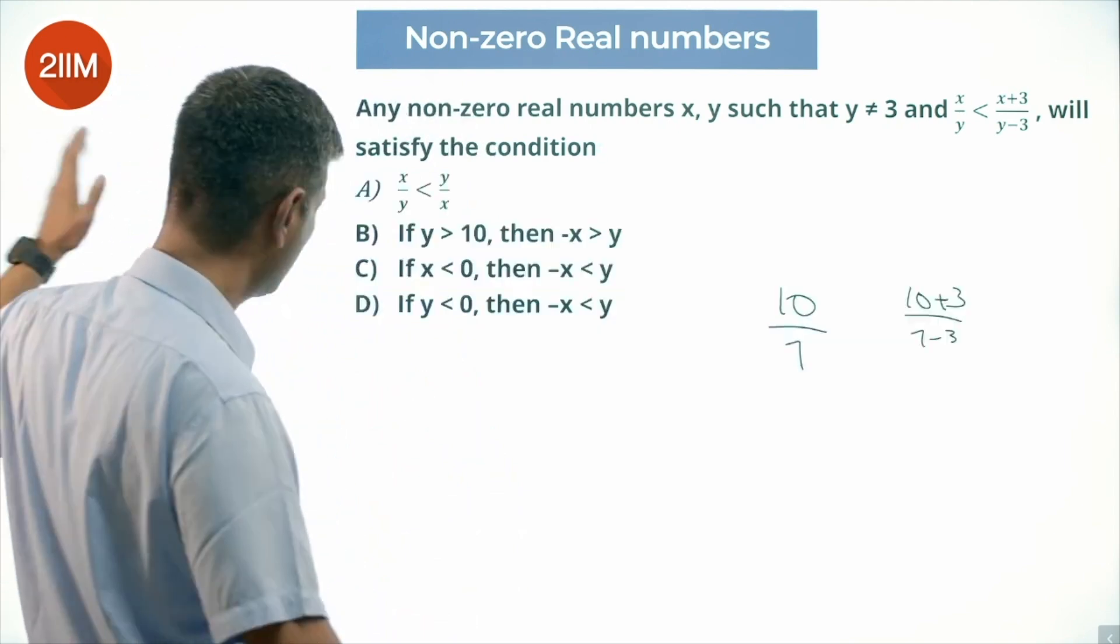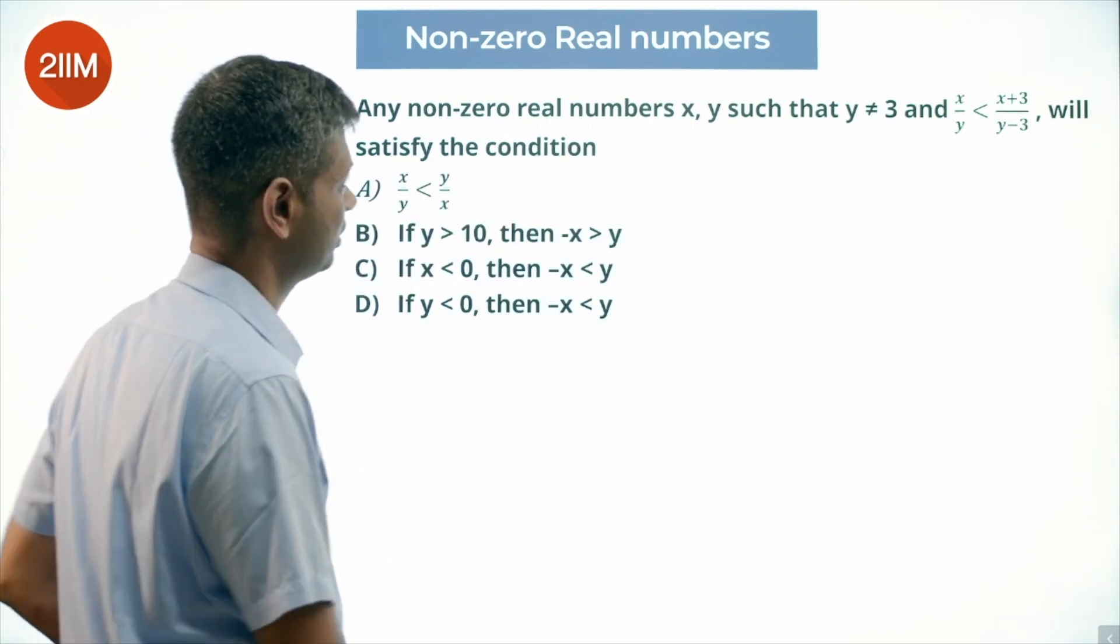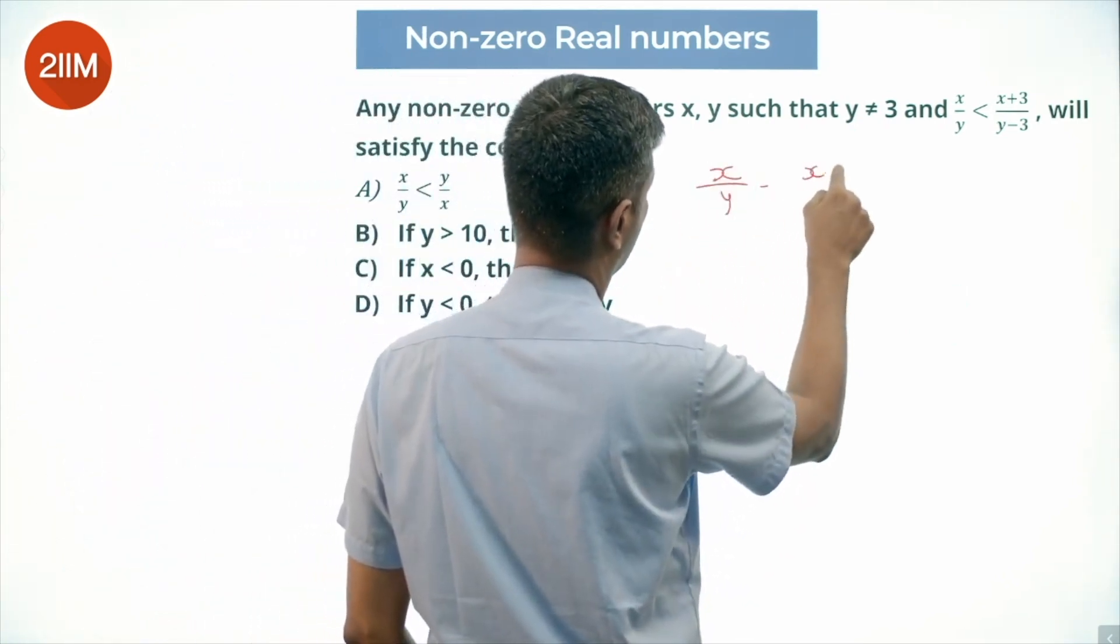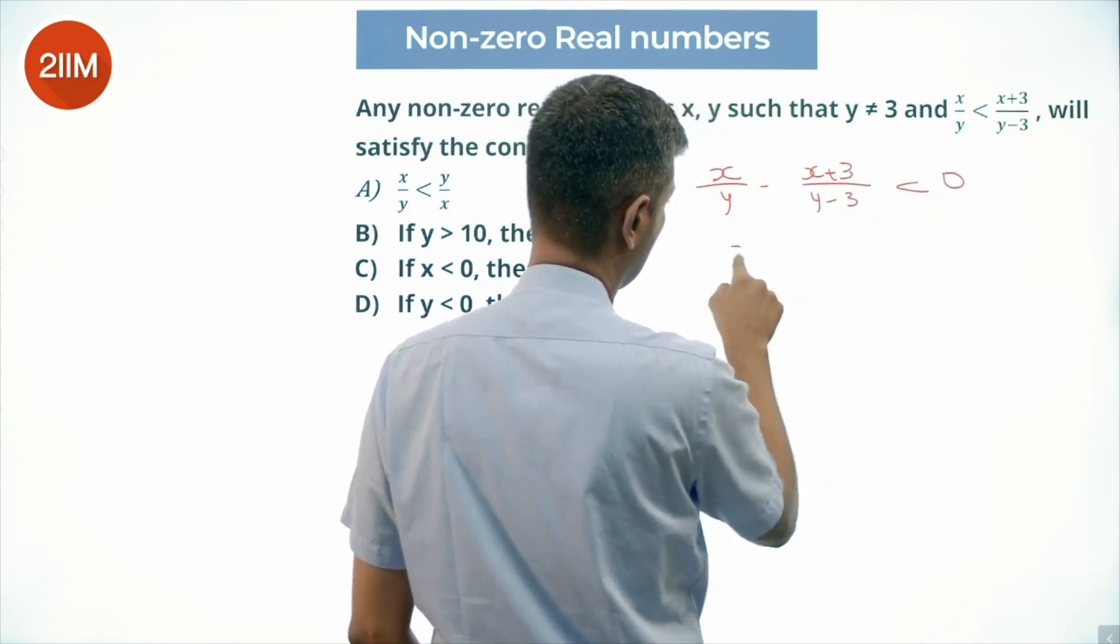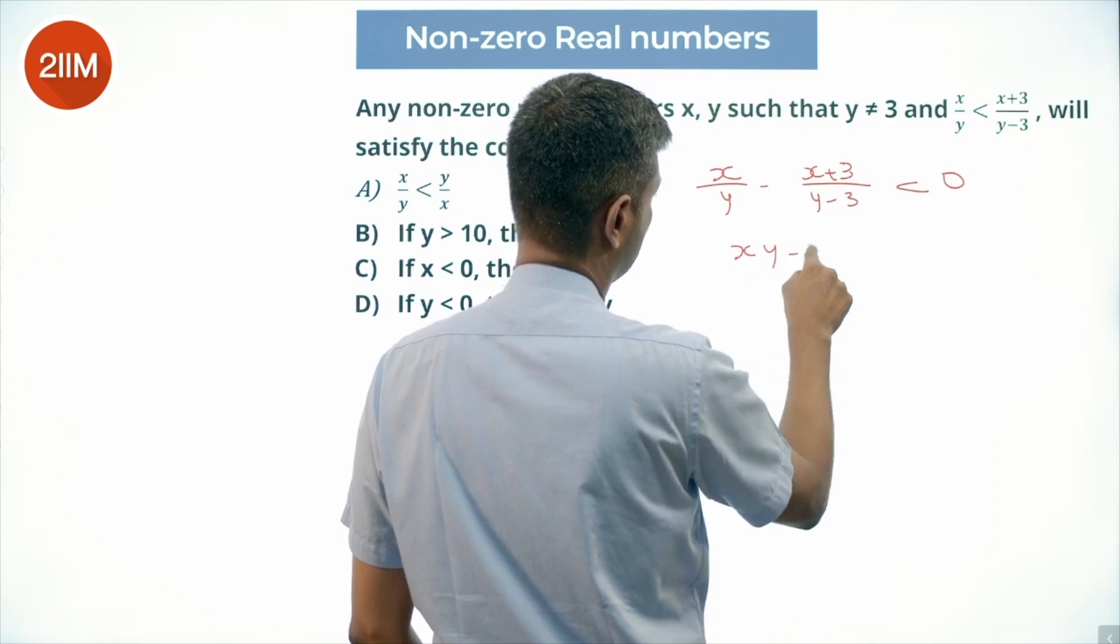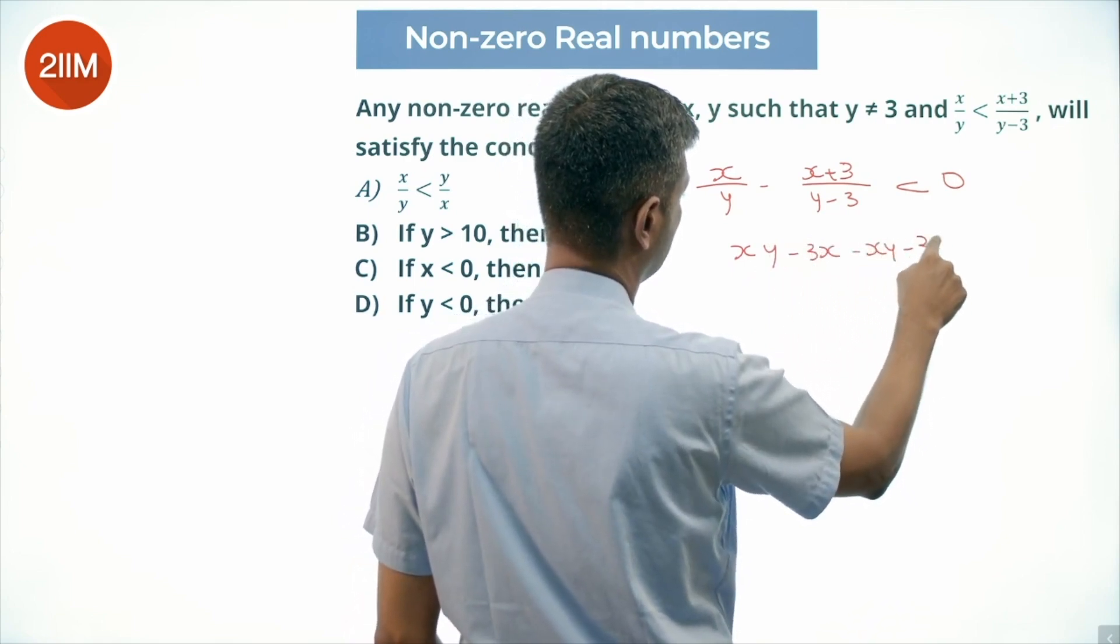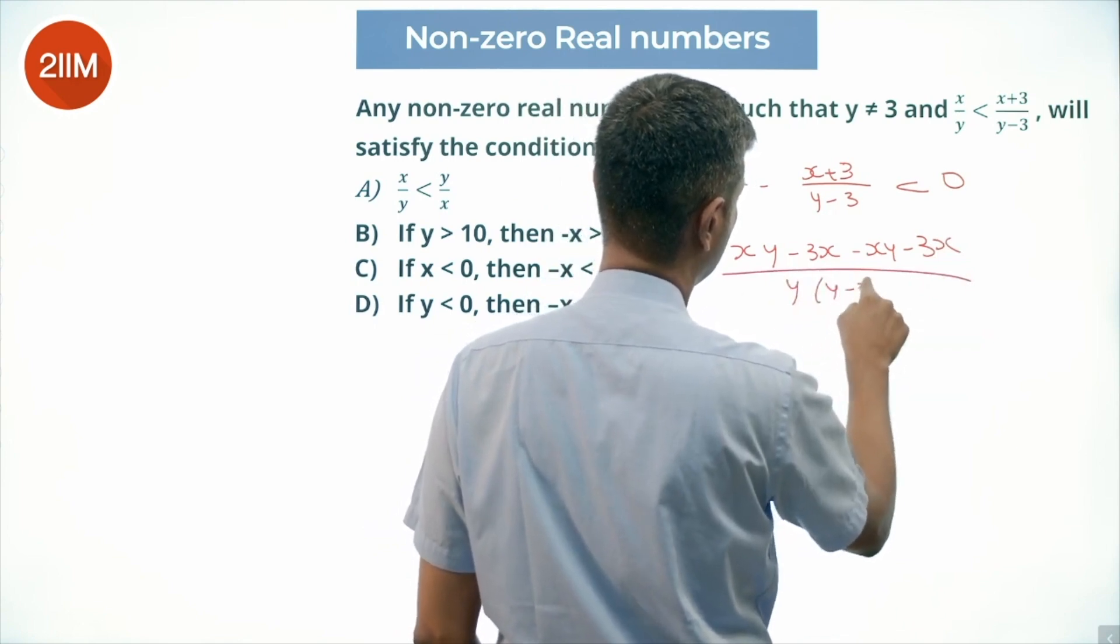Remove this and attack this. What am I going to do? I'm going to say x/y minus (x+3)/(y-3) is less than 0. So [x(y-3) - y(x+3)] / [y(y-3)] less than 0.